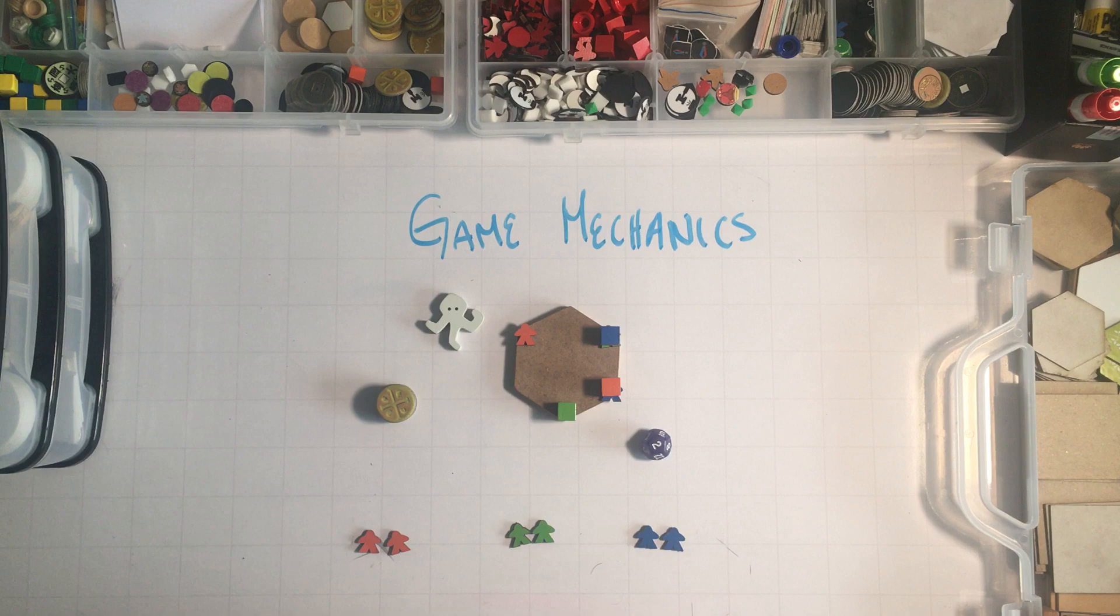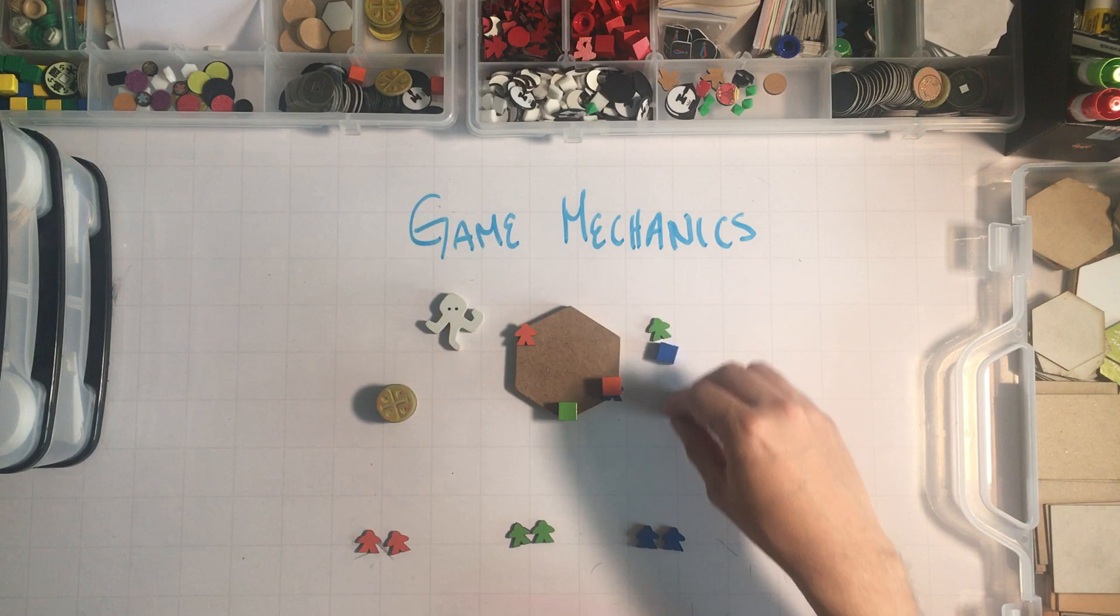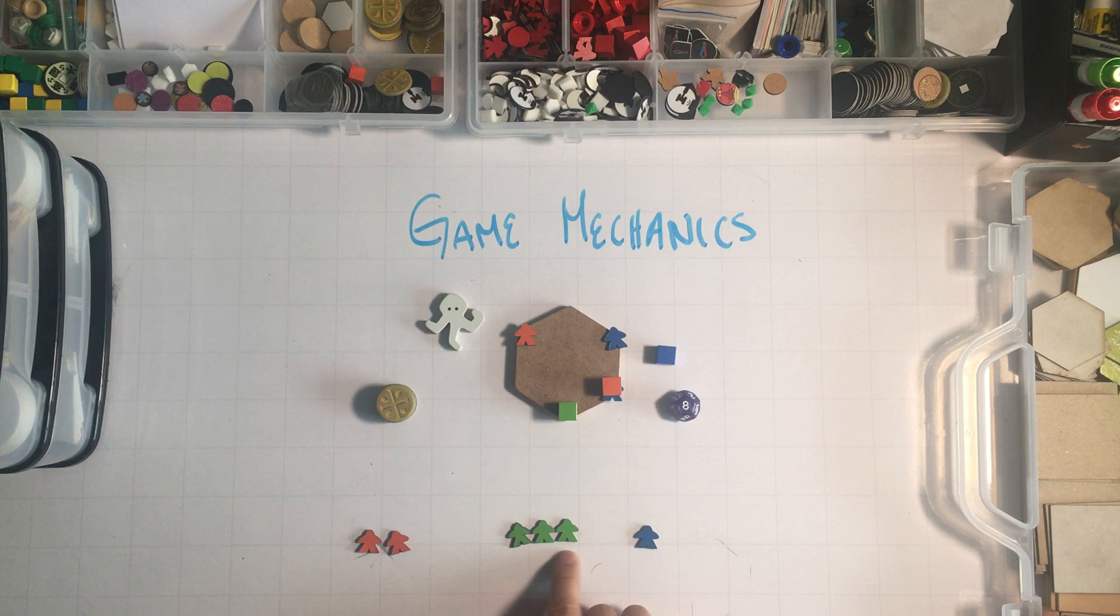In this case, blue is attacking green. So this is an attack and I have a 12-sided die. I will roll the die and if I get a certain number, eight or more, I will be able to capture that spot and deliver this meeple back to its supply.